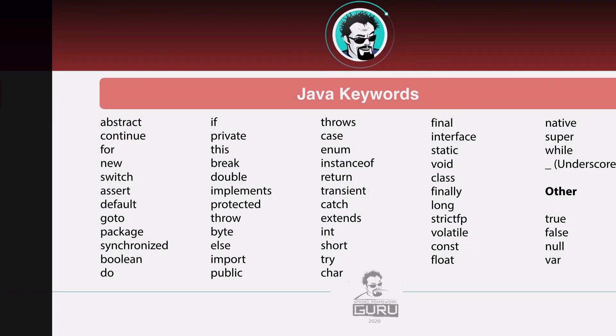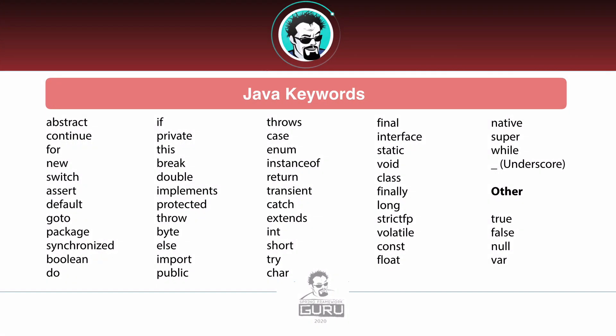Let's take a look at these keywords. These are all things that you cannot use for class names, variable names, or method names. In the lower right-hand side there is a bold 'other' — that is not a keyword, but the words below it do have special meaning. The values true, false, and null are literals. And var is a special identifier introduced in Java 11, where the compiler can infer the type. Remember, these are all words you cannot use for naming Java identifiers.